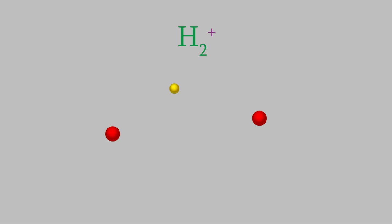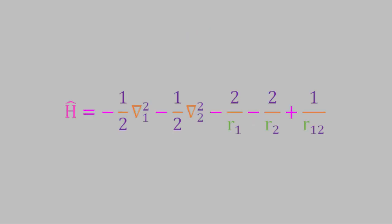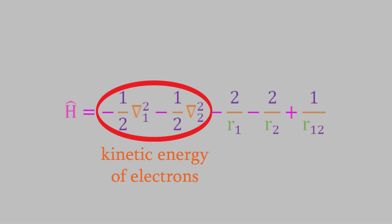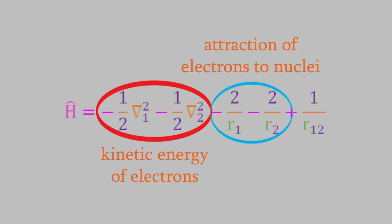Well, let's look at the Hamiltonian for the helium atom to get an idea of what the hydrogen plus Hamiltonian will be. We'll use atomic units to keep things looking simple. In the helium Hamiltonian, these terms are for the kinetic energy of the electrons. These are for the attraction between the electrons and the nucleus, and this one is for the repulsion between the electrons.